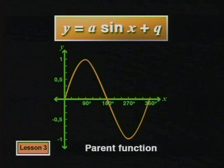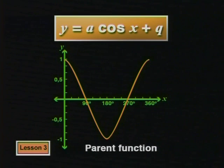Have a look at the general formula for the sine functions: y equals a sine x plus q. The parent function is y equal to sine x, so it has an a value of 1 and a q value of 0. The general formula for the cosine functions is y equals a cos x plus q. The parent function's formula is y equal to cos x, so it also has an a value of 1 and a q value of 0.